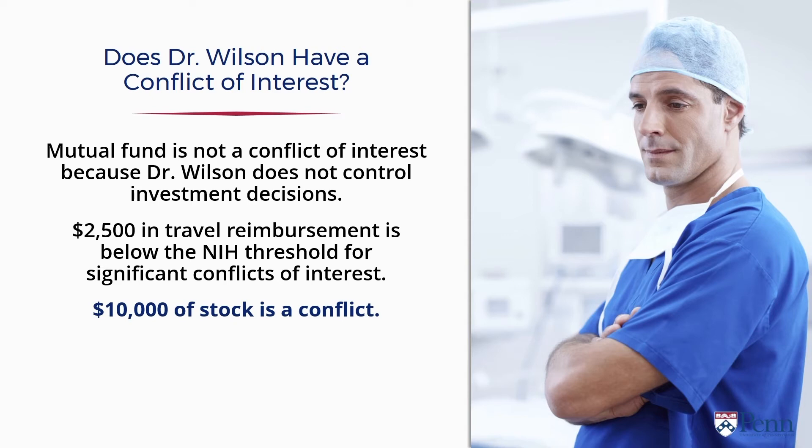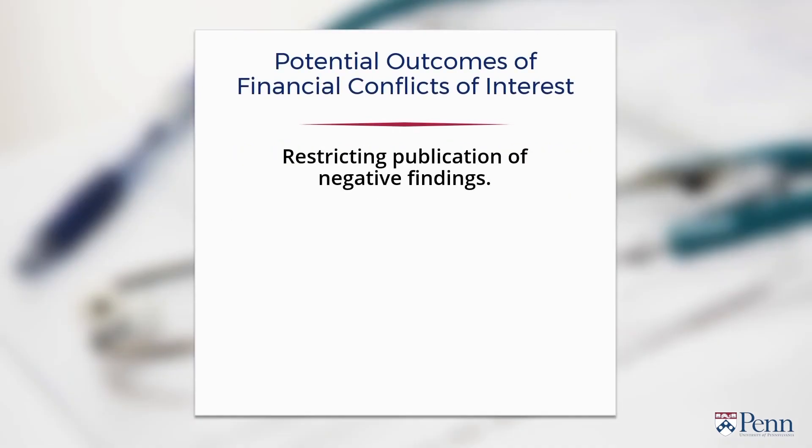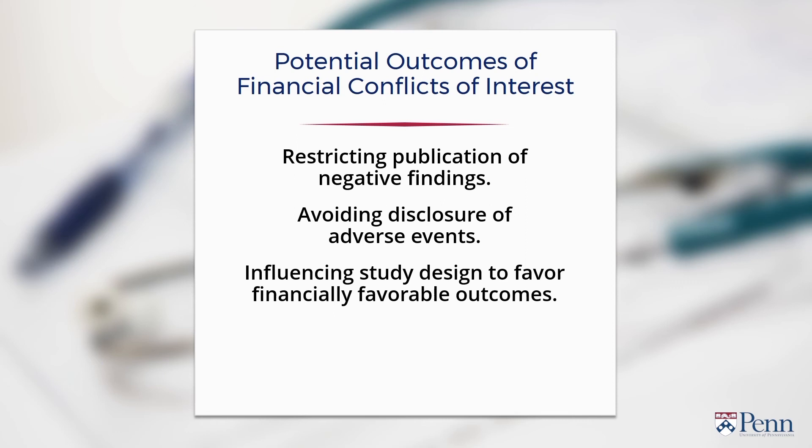There are two primary ethical concerns related to conflicts of interest for biomedical researchers. One, we want to preserve the soundness of the research results — we want the integrity of the research. And second, we want to protect human research participants from any harm that might result from distorted judgment. Financial conflicts of interest among investigators and industry create incentives to serve commercial interests and finances, rather than the advancement of scientific knowledge and the protection of human subjects. The outcomes could include restricting publication of negative findings and avoiding the disclosure of adverse events. Conflicts can influence study design decisions, which in turn can favor certain outcomes that result in higher financial returns.